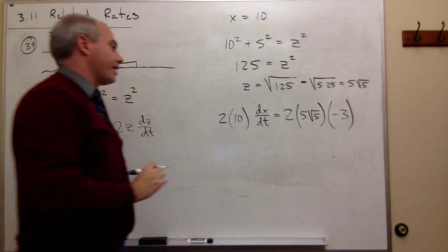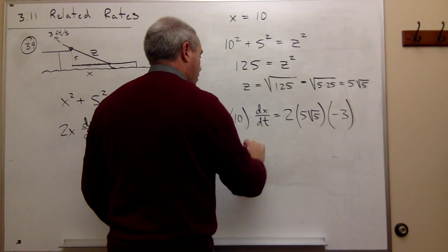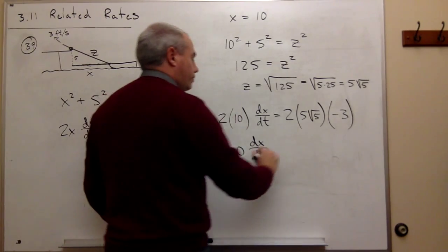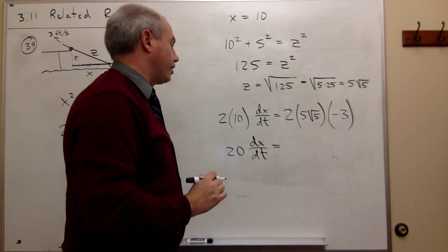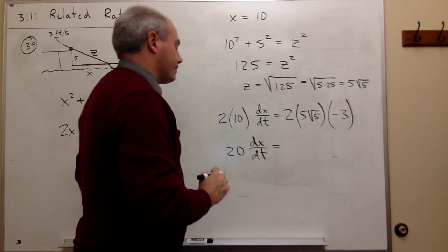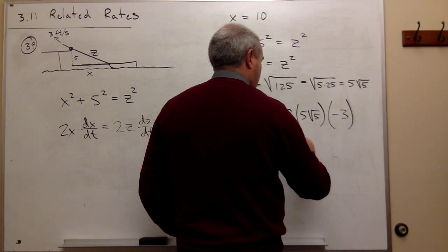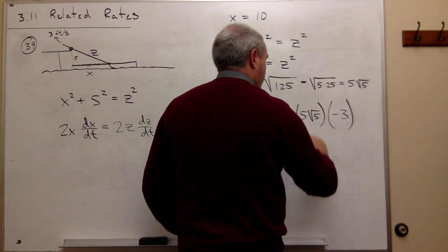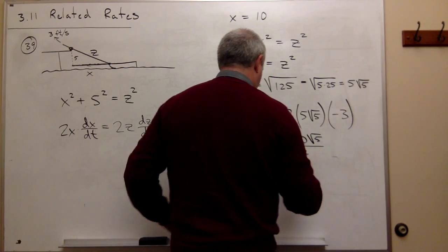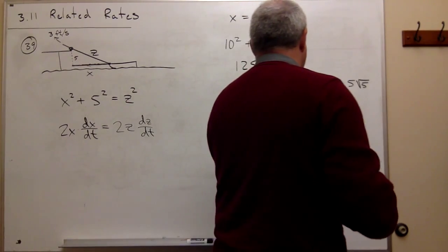Let's put this all together. I get 20(dx/dt) is equal to, let's see what we've got here: 2 times 5 is 10, times -3 is -30√5.